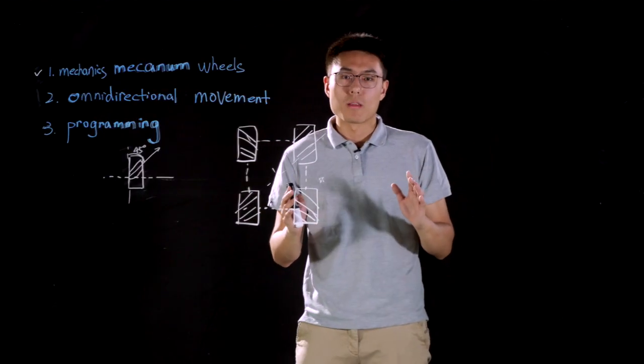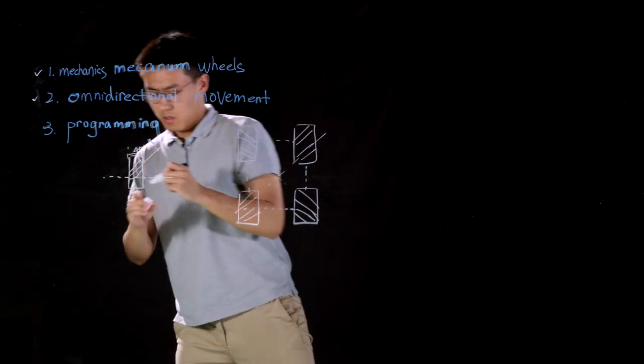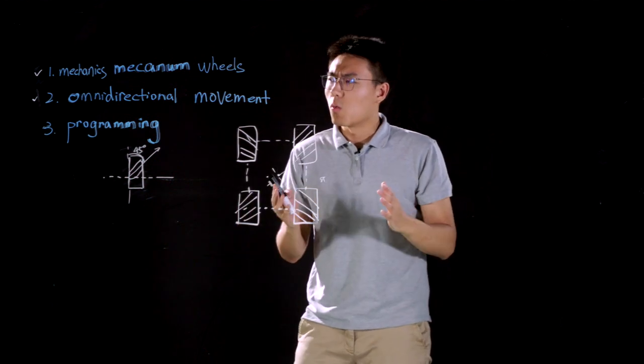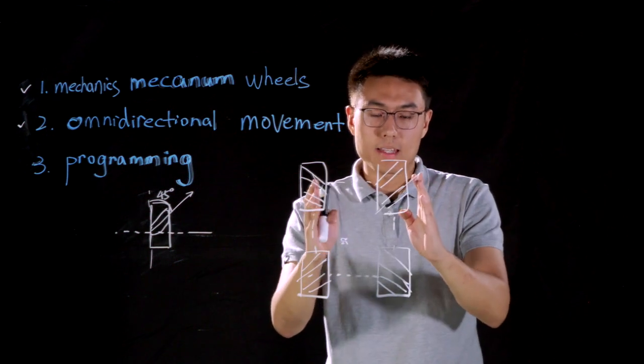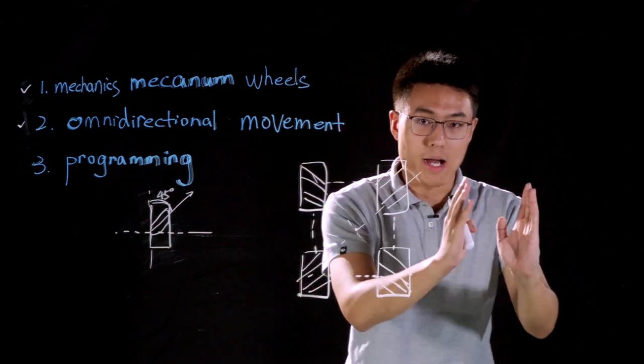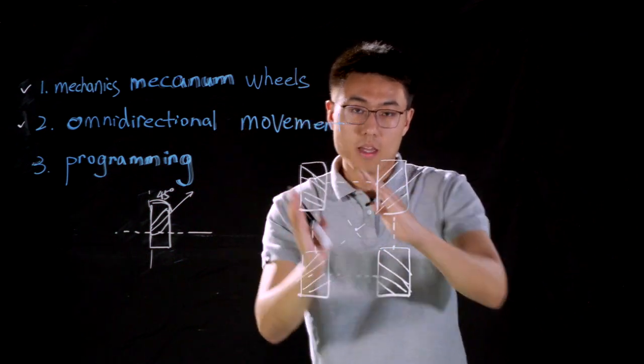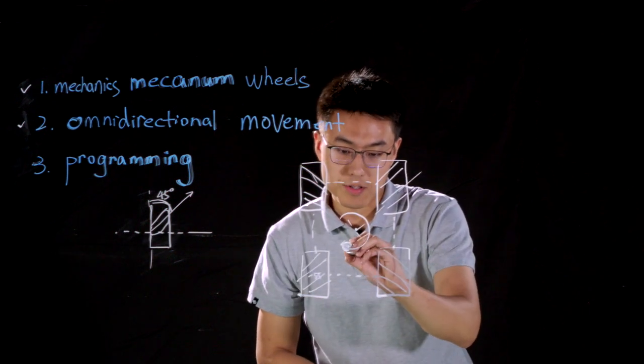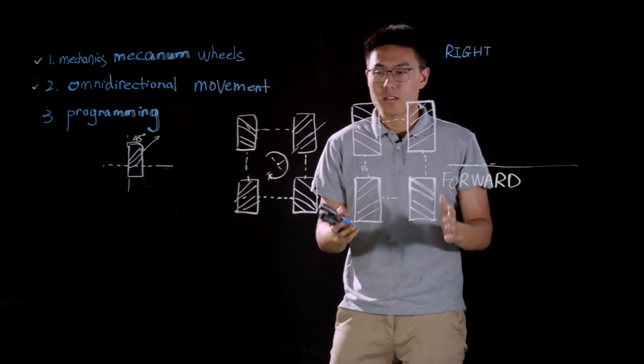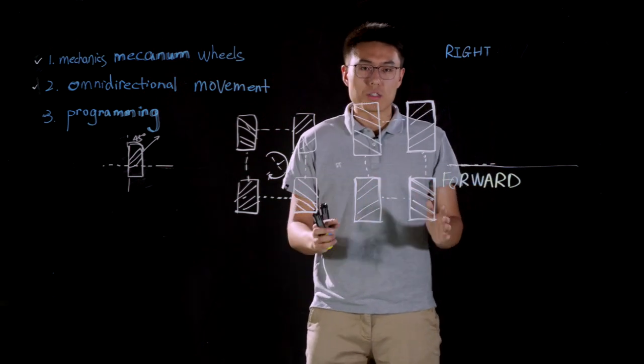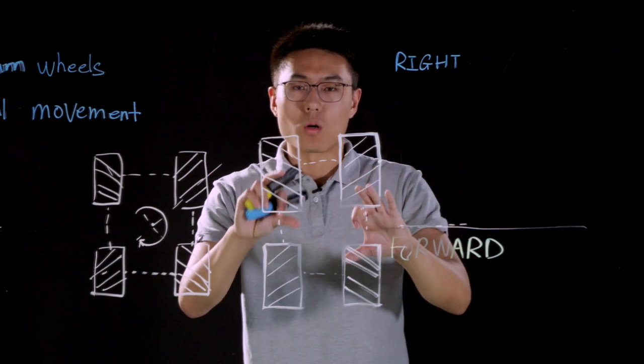So how do RoboMaster S1 use these four Mecanum wheels to realize omnidirectional movement? Before we're doing some analysis, we need to know what omnidirectional movement is. It basically means our S1 can not only move forward, backward, to right or to left, but also move obliquely and even rotate around its geometric center. Now you may wonder how it is done. Actually, it is super easy. All we need to do is do some very simple force analysis on each wheel when S1 is in different kinds of motion.